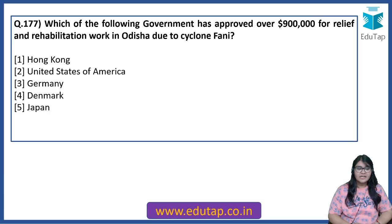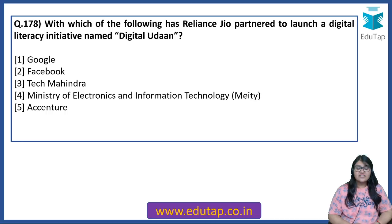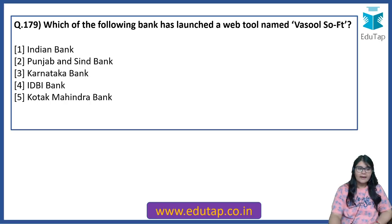Which of the following governments has approved over $900,000 for relief and rehabilitation work in Odisha due to Cyclone Fani? A question can also be asked as: Cyclone Fani is related to which state? The answer for the donation is Hong Kong. With which of the following has Reliance Jio partnered to launch a digital literacy initiative named Digital Udan? The answer is Facebook.